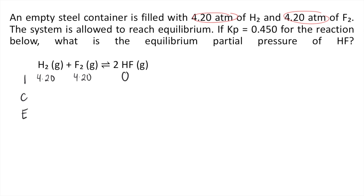For the change row, since reactants are being consumed in the reaction, you put minus X for H₂ and minus X for F₂. For products, since products are being formed, you put plus 2X — remember that HF in the balanced reaction has a coefficient of 2. For E, or equilibrium, you just combine I and C: so 4.20 minus X, 4.20 minus X, and 2X.